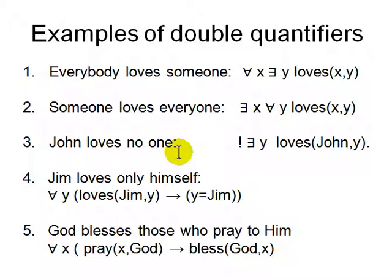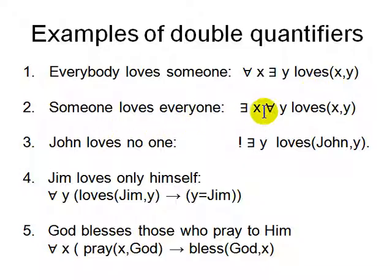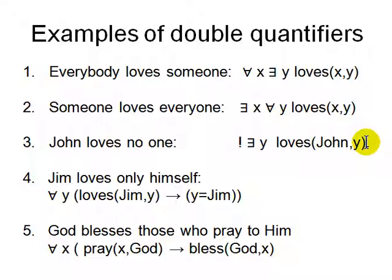You can have double quantifiers, which gets more complicated. Everybody loves someone: For all X, there exists Y such that Loves(X, Y) — everyone loves someone. This is different from someone loves everyone: There exists X such that For all Y, Loves(X, Y) — there is one person who loves every Y. John loves no one: NOT There exists Y such that Loves(John, Y) — there is nobody whom John loves. Jim loves only himself: For all Y, if Loves(Jim, Y) then Y = Jim.